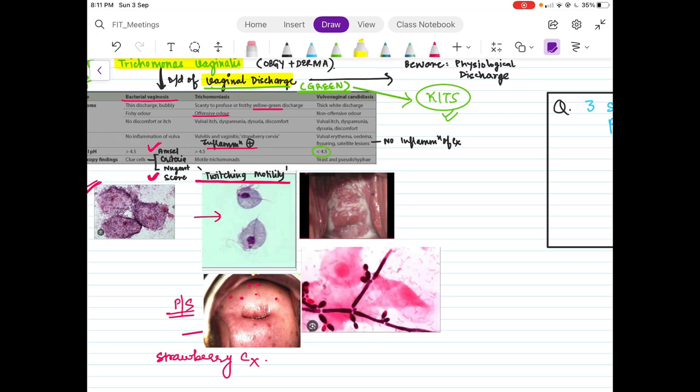Falling leaf motility for Giardia, twitching motility along with a history of greenish-yellow, foul-smelling discharge. You will know it is Trichomonas. Also inflammation is present. Hence, on per speculum examination, you can see these punctate hemorrhages, and this is known as the very famously strawberry cervix.